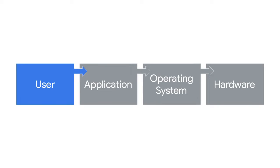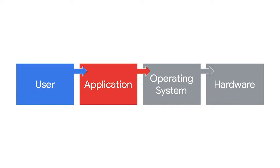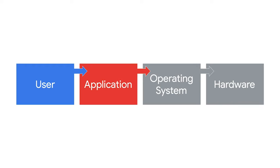The process starts with you, the user. To complete tasks, you use applications on your computer. An application is a program that performs a specific task. When you do this, the application sends your request to the operating system. From there, the operating system interprets this request and directs it to the appropriate component of the computer's hardware. The hardware will also send information back to the operating system, and this in turn is sent back to the application.